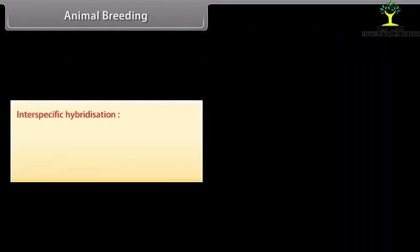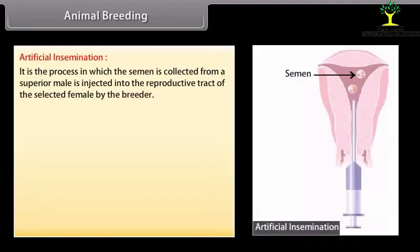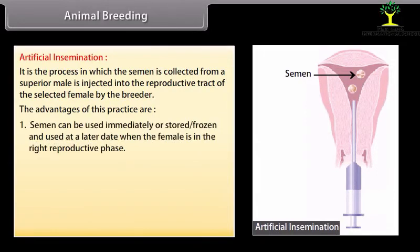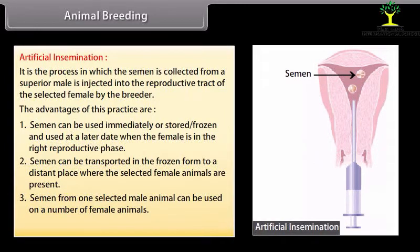Interspecific hybridization is a method of outbreeding in which male and female animals of two different species are crossed to combine desirable features of both parents. For example, the mule is produced by a cross between a male donkey and a female horse. Artificial insemination is the process in which semen collected from a superior male is injected into the reproductive tract of a selected female by the breeder. Advantages: semen can be used immediately or stored frozen for later use; semen can be transported frozen to distant locations where selected females are present; semen from one male can be used on multiple females. The disadvantage is that the success rate is fairly low.